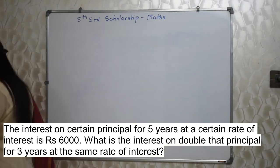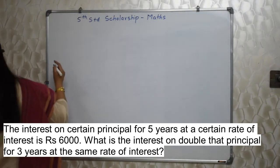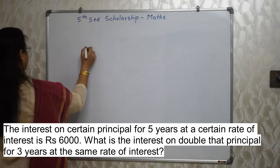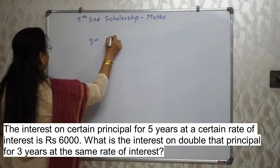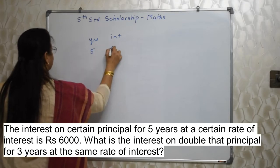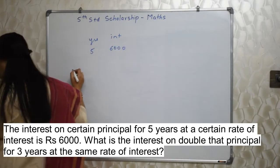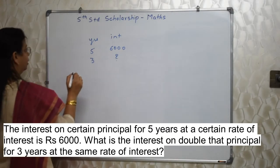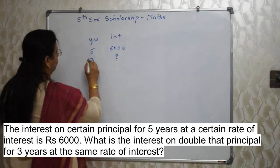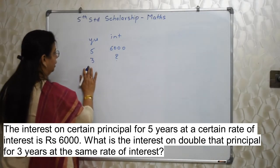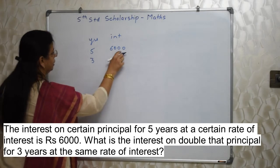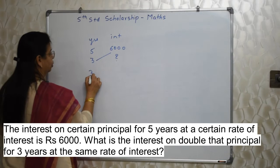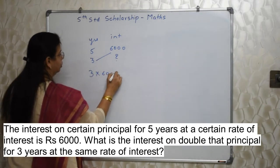Here, they have given years and interest — 5 years gives Rs. 6000 interest. Now they are asking for 3 years. Interest and time are always directly related. So we write it: for 5 years, Rs. 6000; for 3 years, how much? You know cross multiplication: 3 into 6000 upon 5. That gives 3 into 1200, which is 3600.